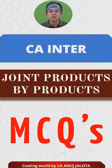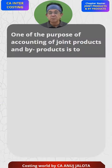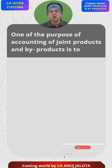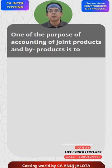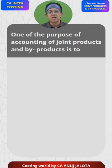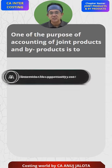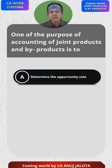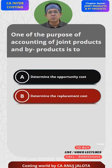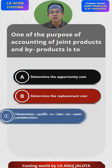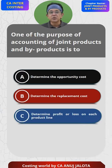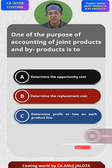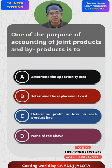CA Inter joint products and by-products MCQs. One of the purposes of accounting for joint products and by-products is: A) to determine opportunity cost, B) to determine the replacement cost, C) to determine the profit and loss on each product line, and D) none of the above.